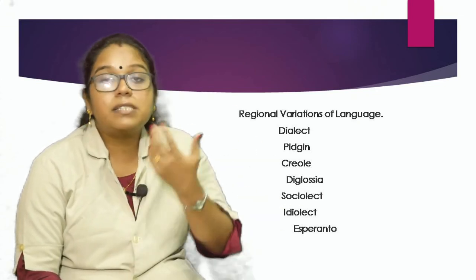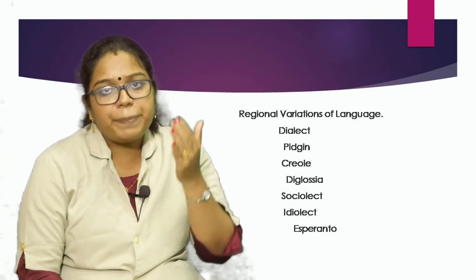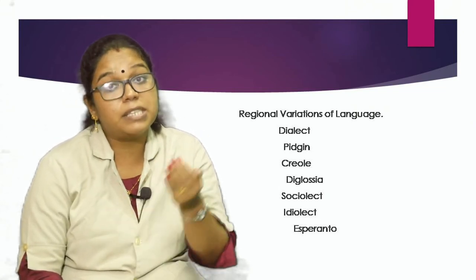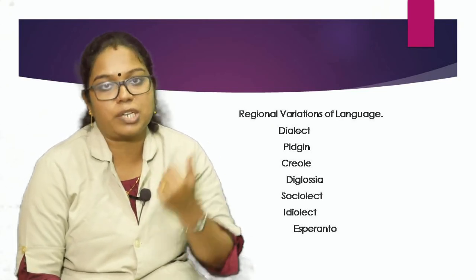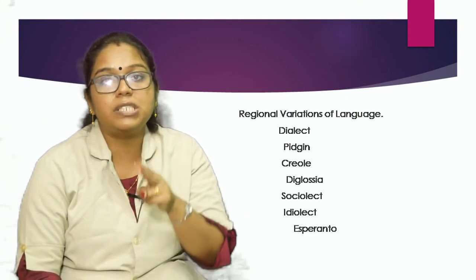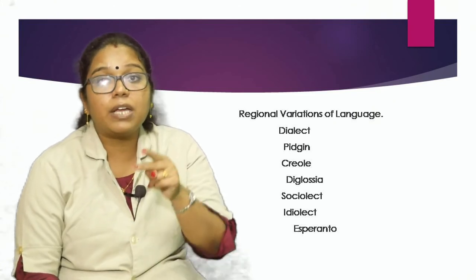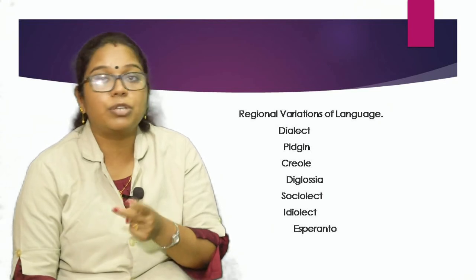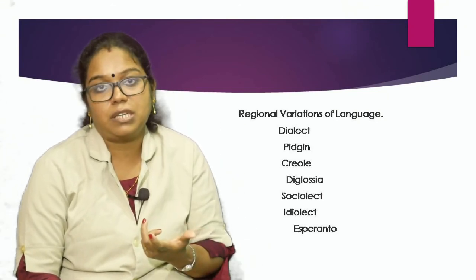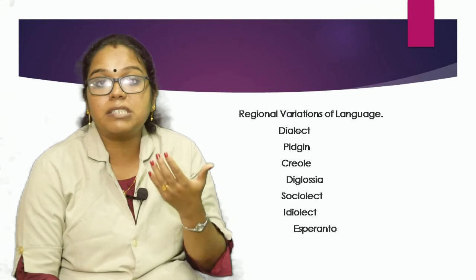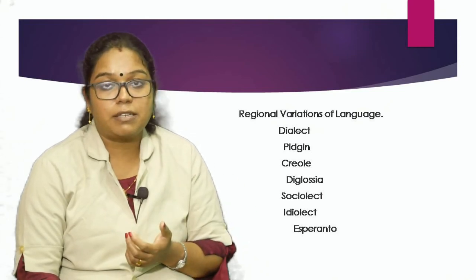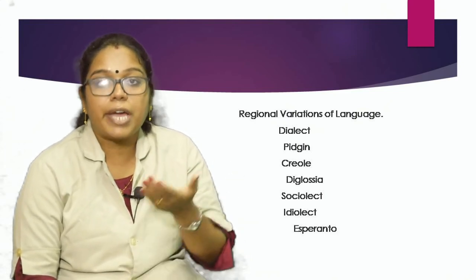When a pidgin language comes to be used for a long period by a community as a whole, and it develops its own vocabulary and structure, it becomes a creole. It is the product of two different languages originally used by the speakers. A creole may arise when a pidgin becomes the first language of the community and begins to be used in a wider range of communicative functions. It becomes a new restructured system, though it may still not be used in very formal contexts. Examples are Jamaican Creole, Haitian Creole, etc.